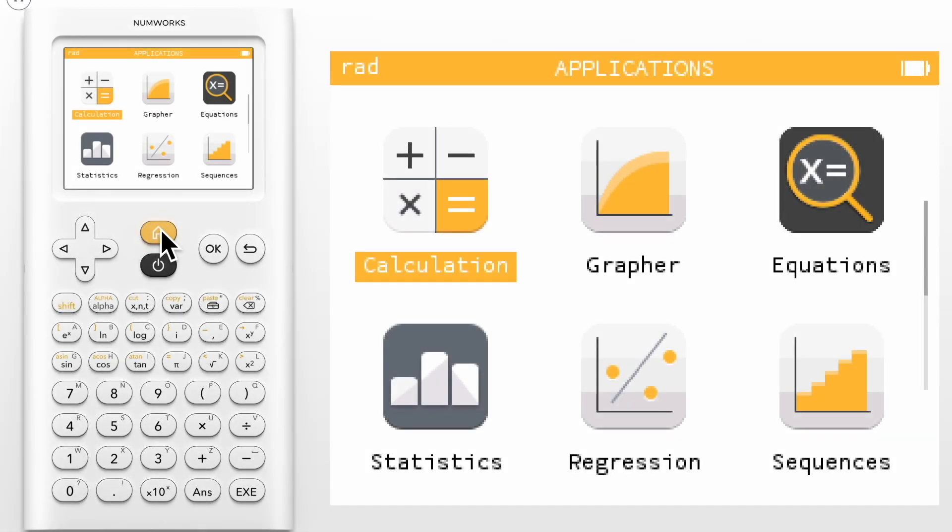Today, we are going to learn how to calculate the derivative at a point of a predefined function using prime notation on the NumWorks graphing calculator.